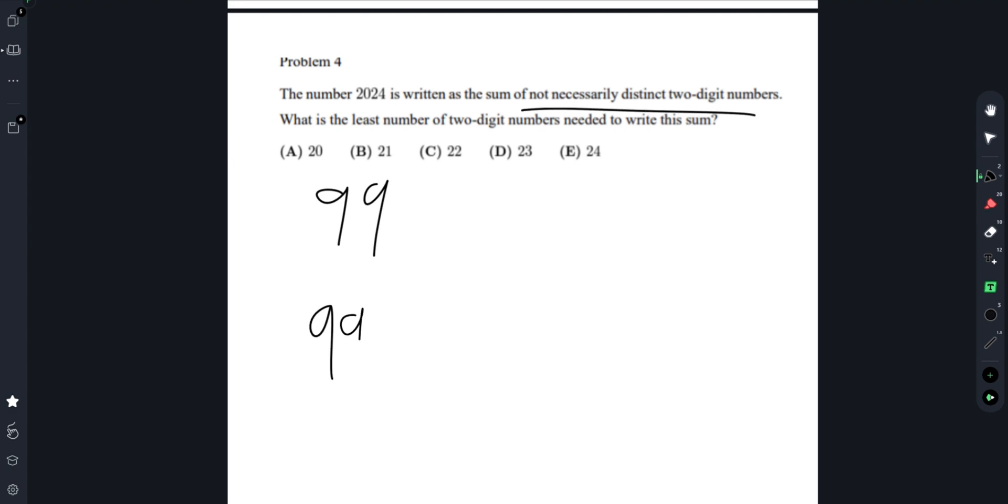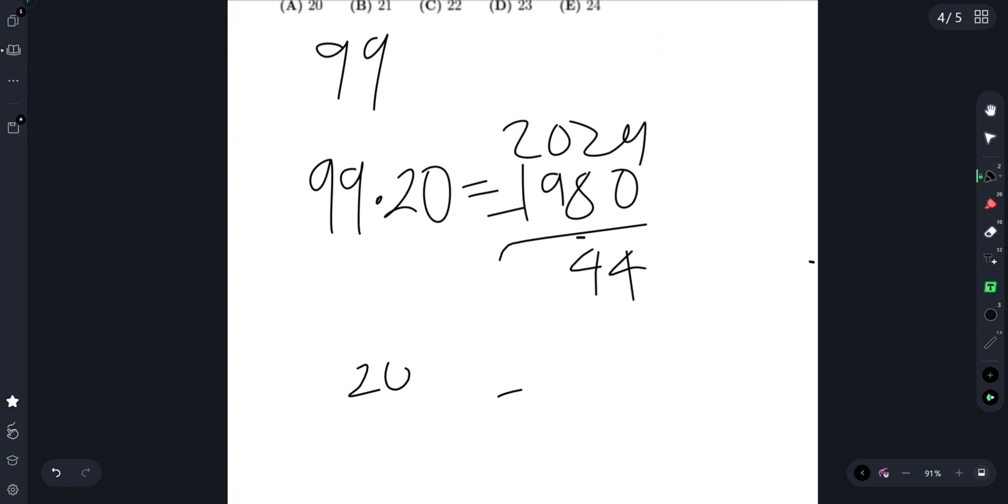So 99 times 20, which is the maximum number of 99s, is 1980. 2024 minus 1980 is 44. So we have 20 ninety-nines and then a 44. Adding up, this is 21 numbers.